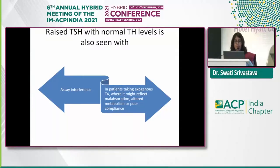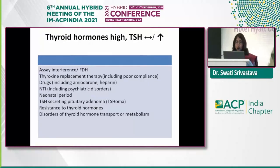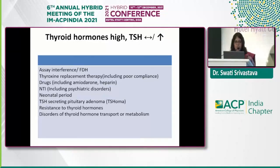In patients on exogenous thyroxine, a high TSH with normal thyroid hormones may reflect malabsorption, altered metabolism, or poor compliance. It is very important not to simply keep increasing the dose. Another pattern — high or normal TSH with high thyroid hormones — is less frequently encountered. This can occur with assay interference, thyroxine replacement including poor compliance, drugs, non-thyroidal illness, the neonatal period, and rarely TSHomas or resistance to thyroid hormones.